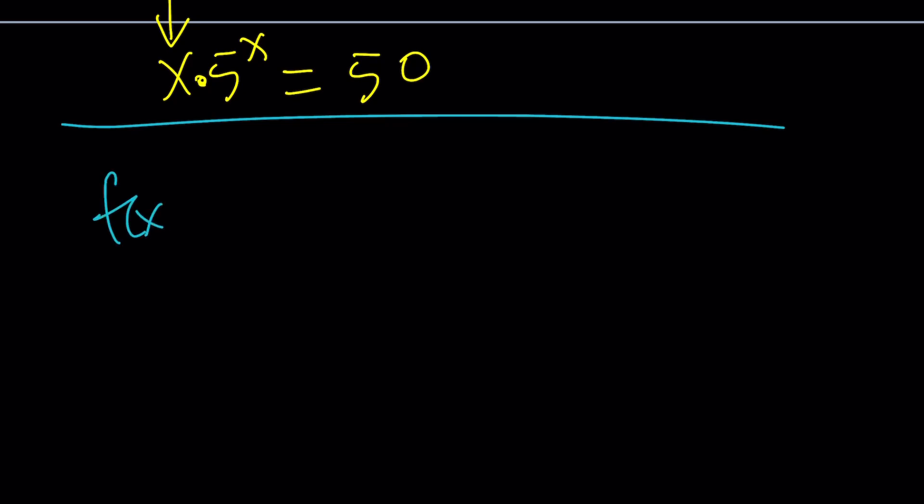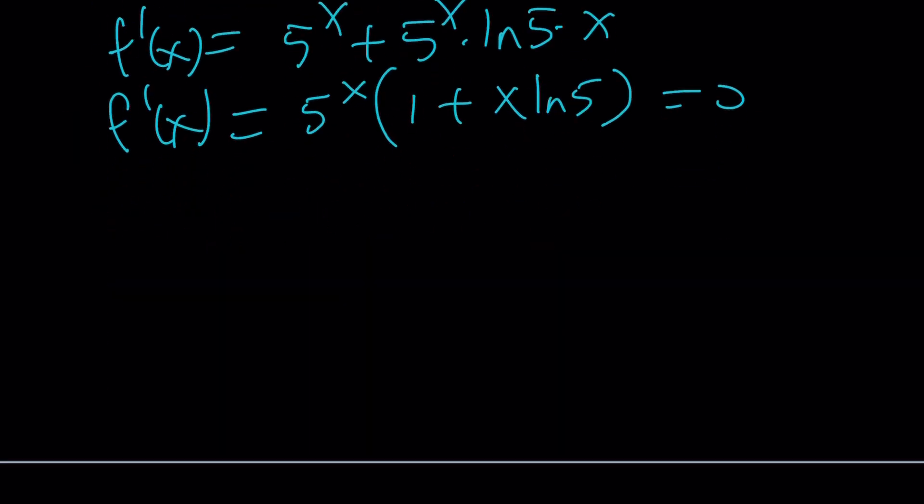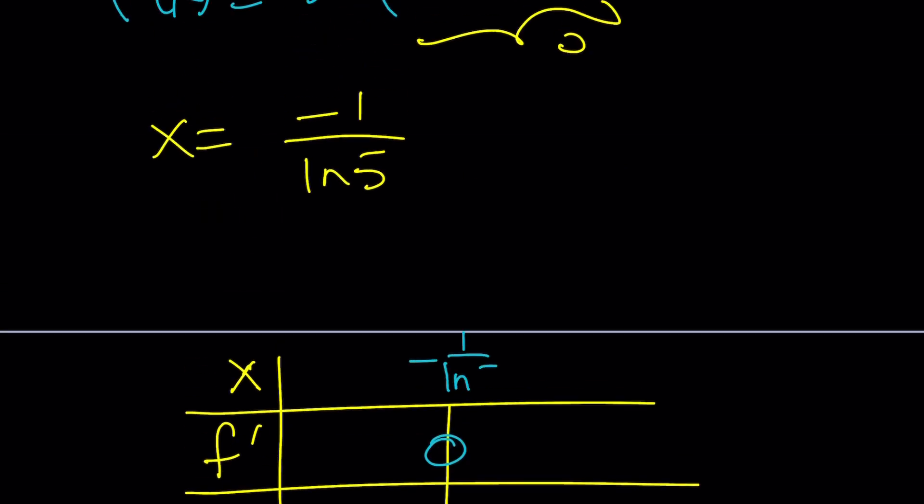So suppose we have the following function, F of x equals x times 5 to the x. If you differentiate this function, you're going to get 5 to the x plus 5 to the x times ln 5 times x, or 5 to the x multiplied by 1 plus x ln 5. And then setting this equal to 0, we find the critical points which are going to come from here. x is just going to be negative 1 over ln 5. By using this critical point, I can make a table of values such as this. This is going to be my x. This is going to be my F prime, and this is going to be my F.